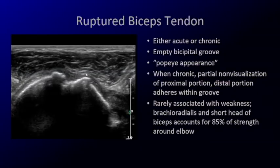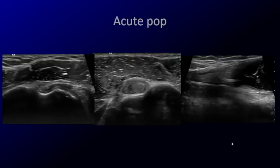If the tendon is missing, it can either be ruptured or dislocated. Look for an empty groove — many times the muscle will be retracted and balled up, giving a Popeye appearance in the anterior forearm. This is rarely associated with significant weakness because the long head of the biceps tendon does not account much for the strength around the elbow. Here's a patient who presented with an acute pop. We're looking at the bicipital groove and there's a missing tendon — just a collapsed sheath with a little fluid. Scanning distally, we find a thickened retracted tendon, and following it in long axis, the muscle is balled up.